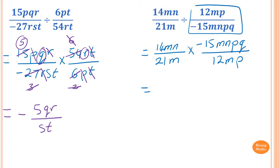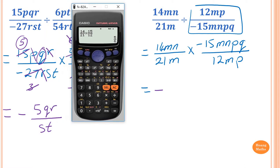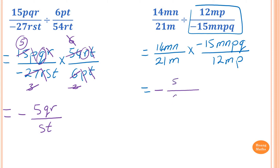There is only one negative number, so the answer is negative. We can use a calculator to simplify the numerals: 14 over 21 times 15 over 12 gives 5 over 6. So we write the negative and have 5 over 6.